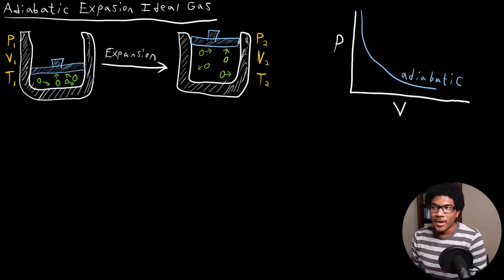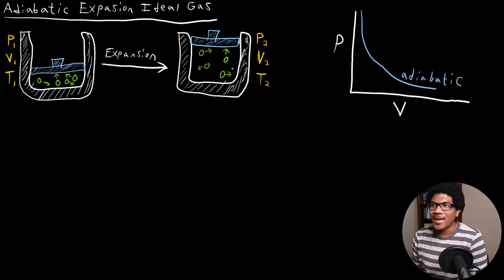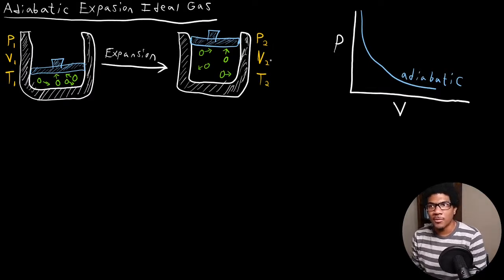If you expand it, you're basically moving that piston up and allowing more room for the gas to move around. That's going to change your system to a pressure P2, volume V2, and a temperature T2.